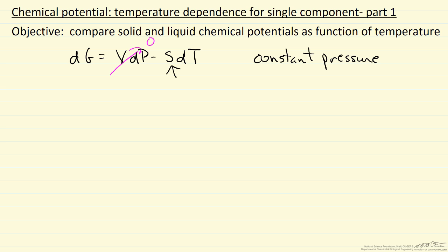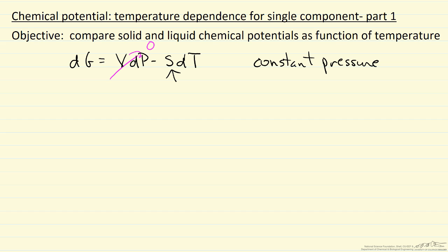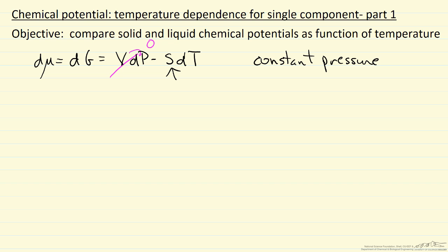Gibbs free energy decreases as we raise the temperature as a function of the entropy. Bigger entropy means a bigger decrease. For a single component, Gibbs free energy is the same as the chemical potential.